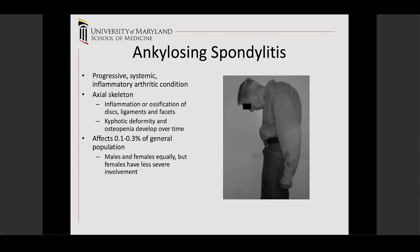Ankylosing spondylitis is a progressive systemic inflammatory articular condition affecting primarily the axial skeleton, occurring in about 0.1 to 0.3 percent of the general population. As their spines ossify, these patients tend to develop progressive kyphosis. Back when we didn't have good anti-inflammatory or biologic inhibitors, severe kyphosis was not uncommon; these days we rarely see it. The key issue is that when kyphotic patients sustain trauma or fall, they have an extension-type injury because their spine is already flexed — so the mechanism is almost always extension in a stiff spine.